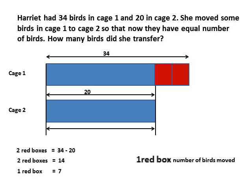Let's revise the question: how many birds are there in cage 2 now? Initially it had 20 plus 7, so you have 27. Cage 1 had 34, you subtracted 7 which you moved to cage 2, so you also have 27. Now you can see that cage 1 and cage 2 have equal number of birds.